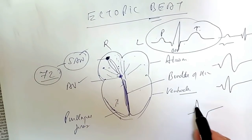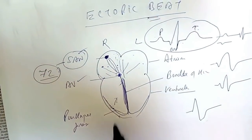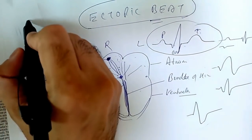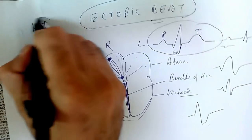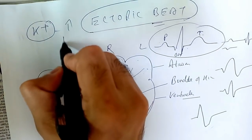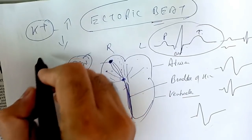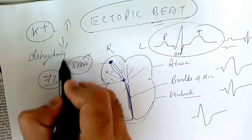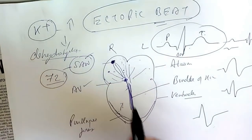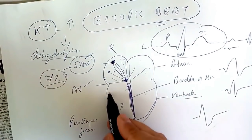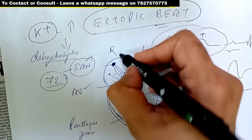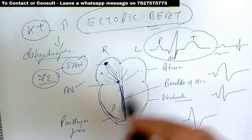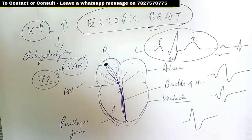So we call it ectopic beat. Ectopic beat can be caused by electrolyte imbalance. If potassium is up or down, if there is severe dehydration, problems with electrolytes. If the heart muscle in any area is damaged, then it can also cause ectopic beats. So all of these things can give you ectopic beat.